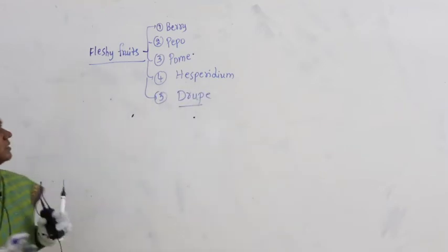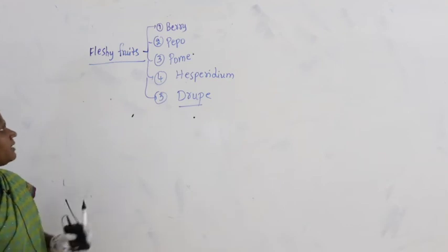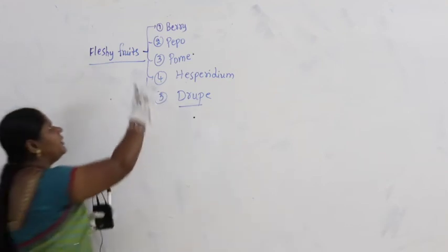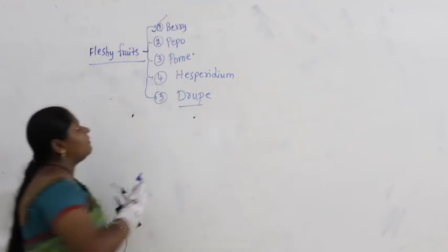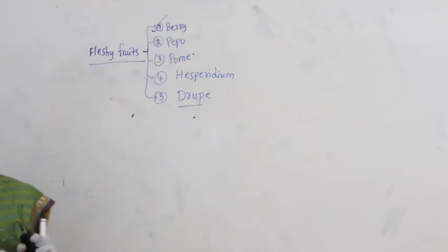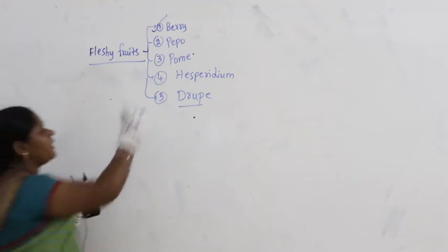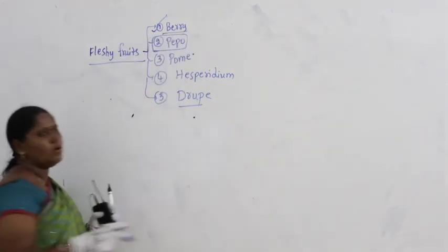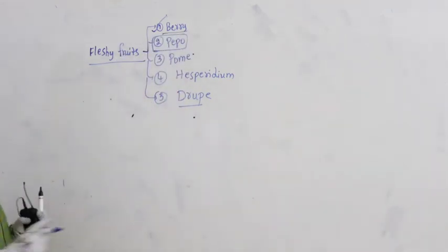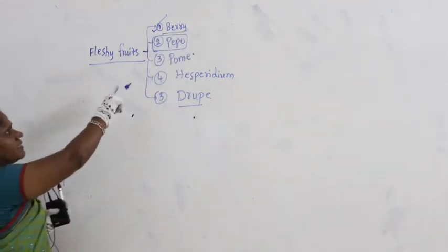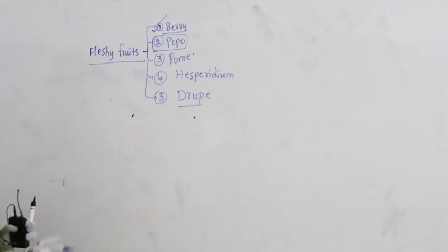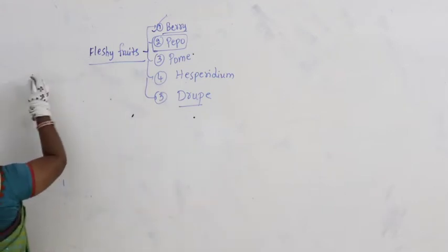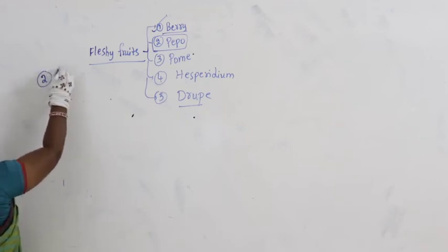So, how many categories do we have? Five categories. We have discussed berry and pepo completely. Now let us continue with pepo. Under fleshy fruits, let us talk about the second one, pepo.